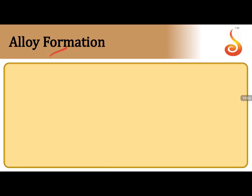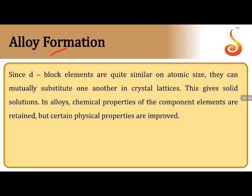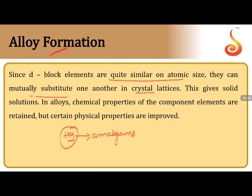Alloy formation is possible when one metal substitutes another in crystal lattices because transition elements have quite similar atomic sizes — they mutually substitute one another to give solid solutions. If one of the metals is mercury, these alloys are called amalgams. Importantly, in alloys, chemical properties are retained while physical properties are improved.